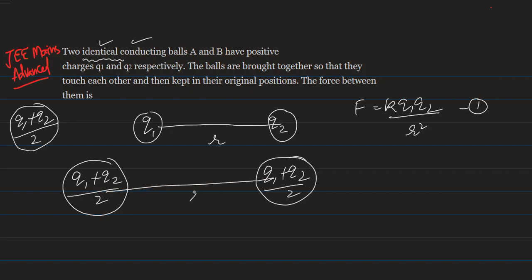Now again they are at their respective positions at the separation of R. So the new force between them is equal to K times Q1 plus Q2 upon 2, the product of charges, so it is squared, into 1 upon R square.